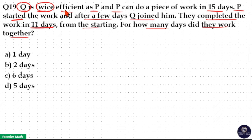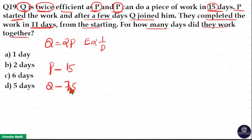Here Q is twice efficient as P means Q equals 2 times P. This is efficiency relation. Efficiency is inversely proportional to number of days worked. P can do a piece of work in 15 days, so Q only takes half the days of P, that is 7.5 days, because Q is 2 times efficient than P.